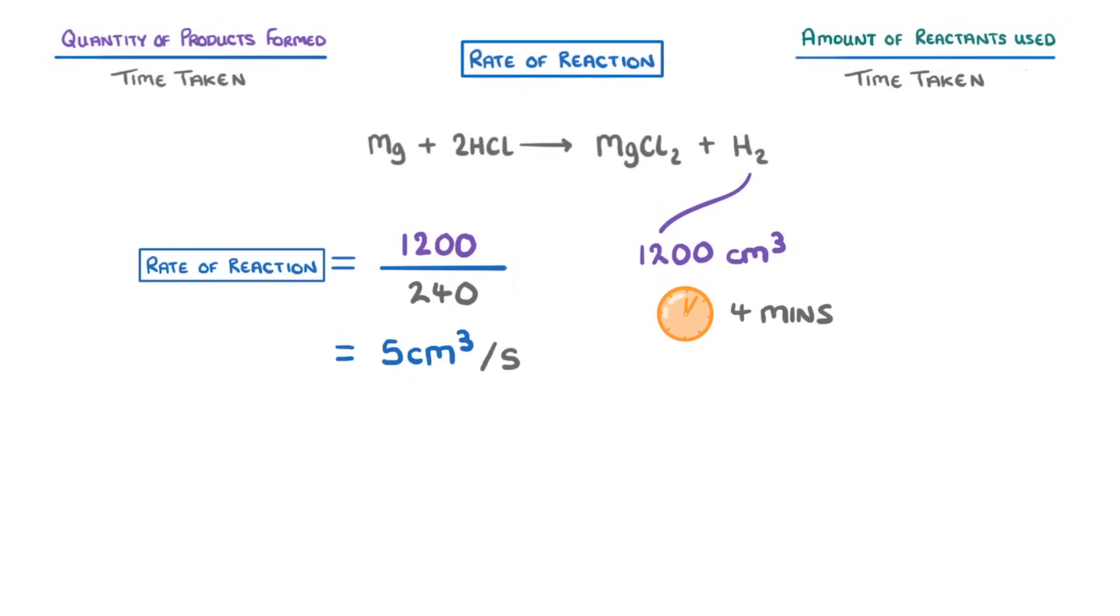The problem with this type of calculation though, is that it only gives us the average rate during those 4 minutes. Whereas in reality, the reaction would have been fastest at the beginning, and then it would have slowed down as the reaction progressed. And by 4 minutes, it might have even finished.